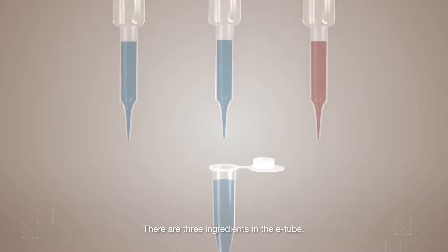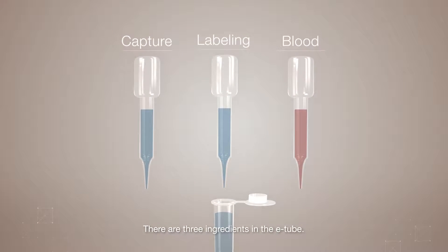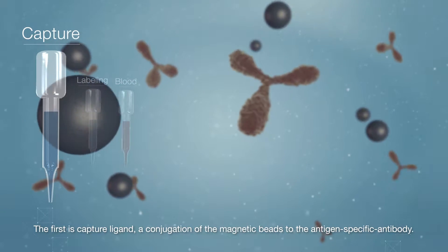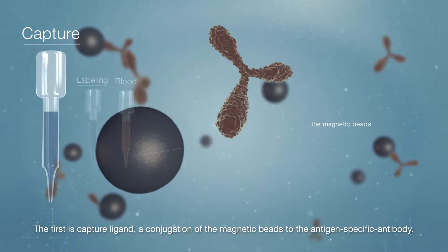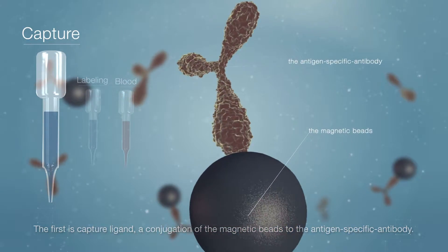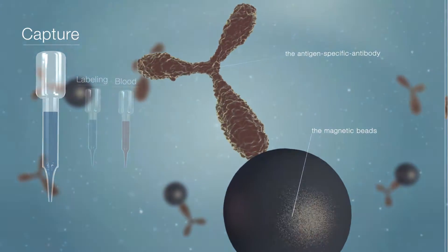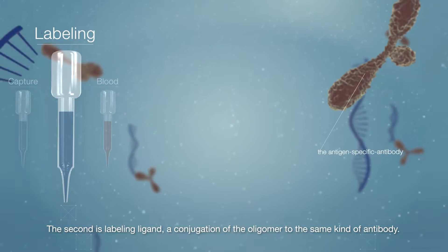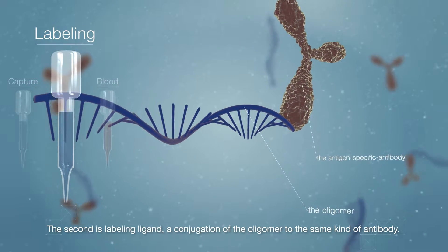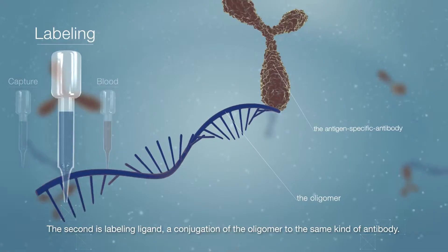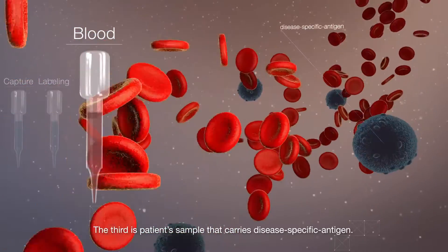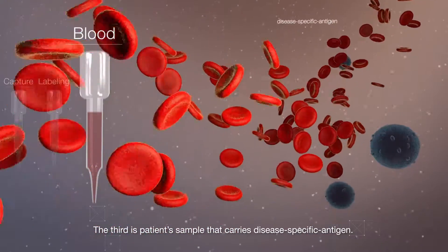There are three ingredients in the E-tube. The first is Capture Ligand, a conjugation of the magnetic beads to the antigen-specific antibody. The second is Labeling Ligand, a conjugation of the oligomer to the same kind of antibody. The third is Patient Sample that carries disease-specific antigen.